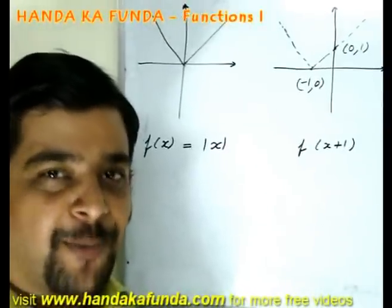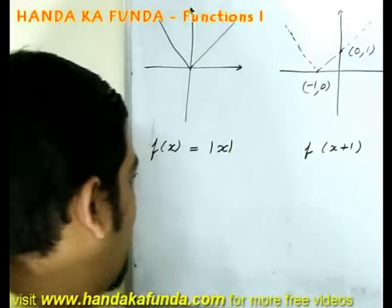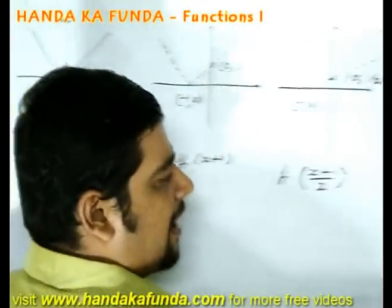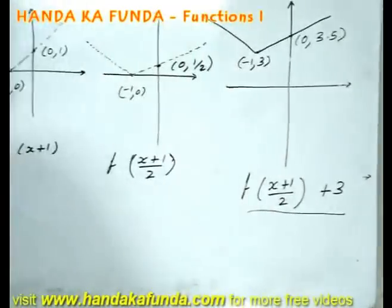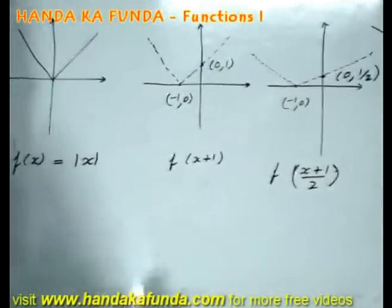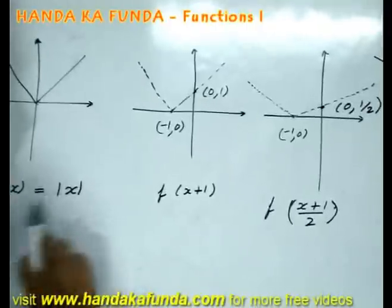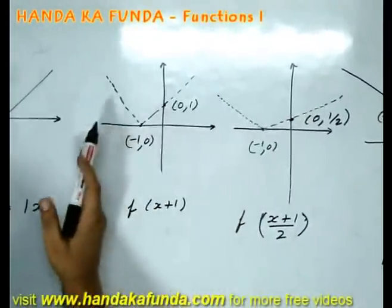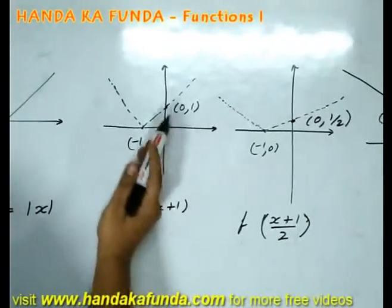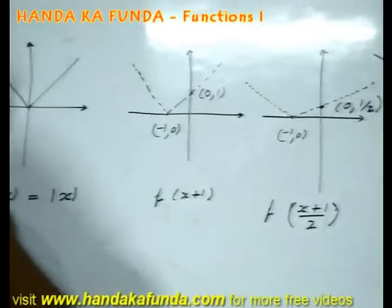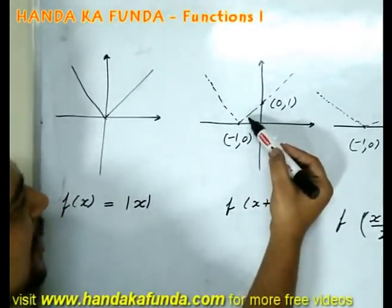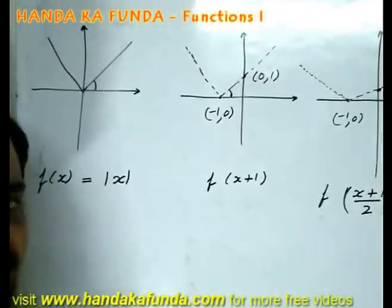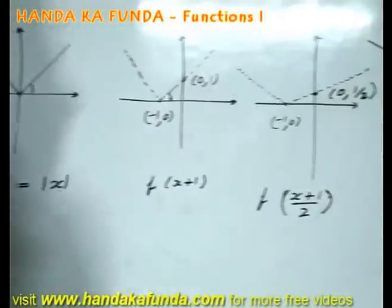Let us see the solution to the problem I just gave you. I was given f(x) equals mod x, and I was asked to find out the graph for f of (x plus 1) by 2 plus 3. So I am doing it in a step-by-step fashion. First of all, if instead of f(x) I am doing x plus 1, as I explained in the previous slide, it will be shifted 1 unit to the left. That is the tentative graph, I am just shifting it 1 unit to the left. The angle has not changed. It was 45 degrees before and it is 45 degrees now.